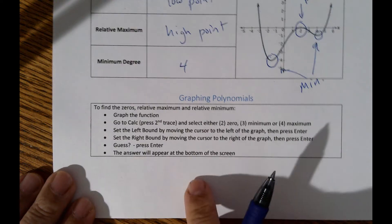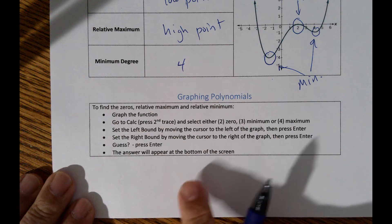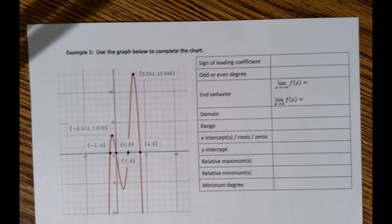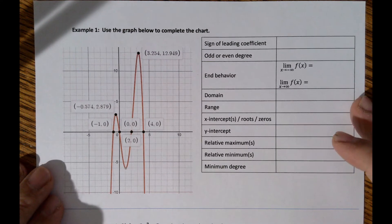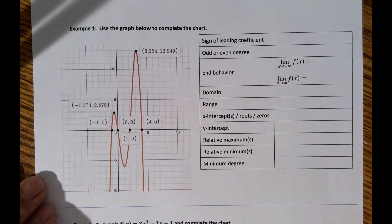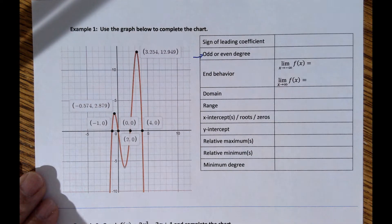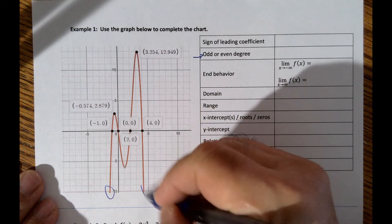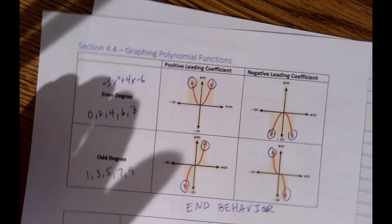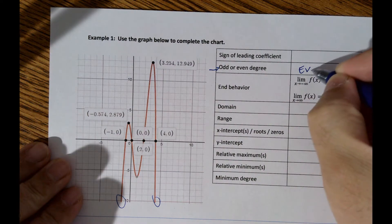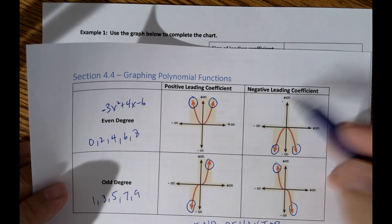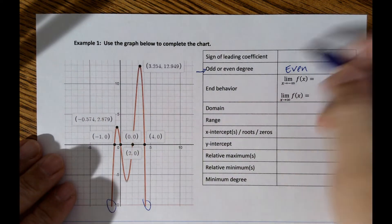Now let's analyze a full graph. Looking at this graph, the first question is: is it odd or even degree? Both ends are going down — the same direction — so it's an even degree. Since both ends go down, that means it has a negative leading coefficient.